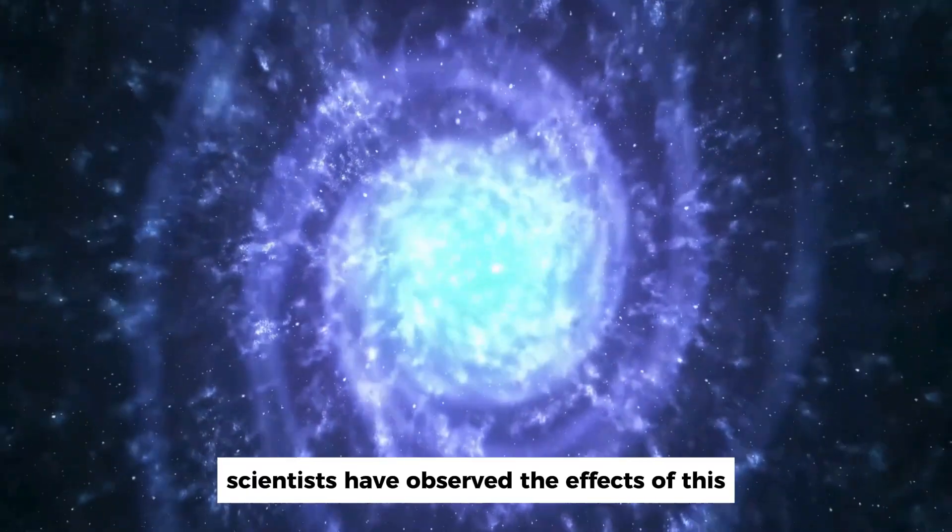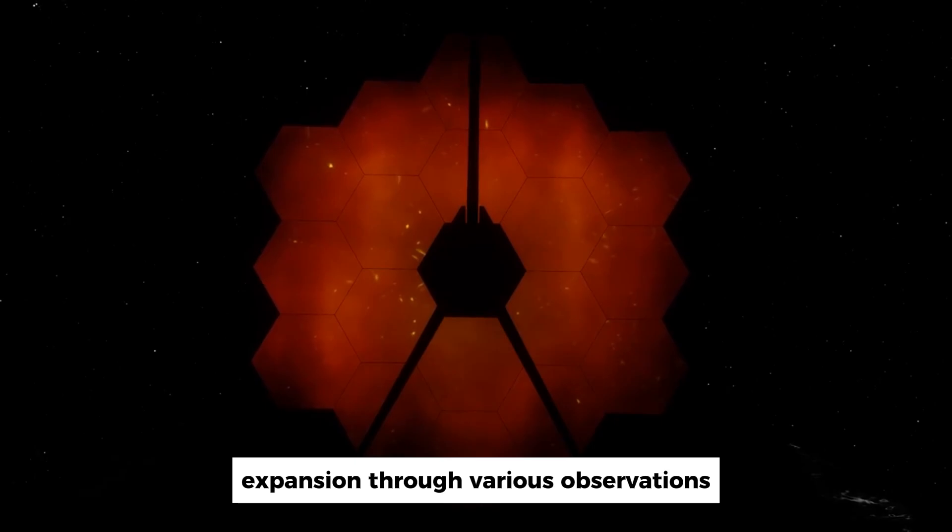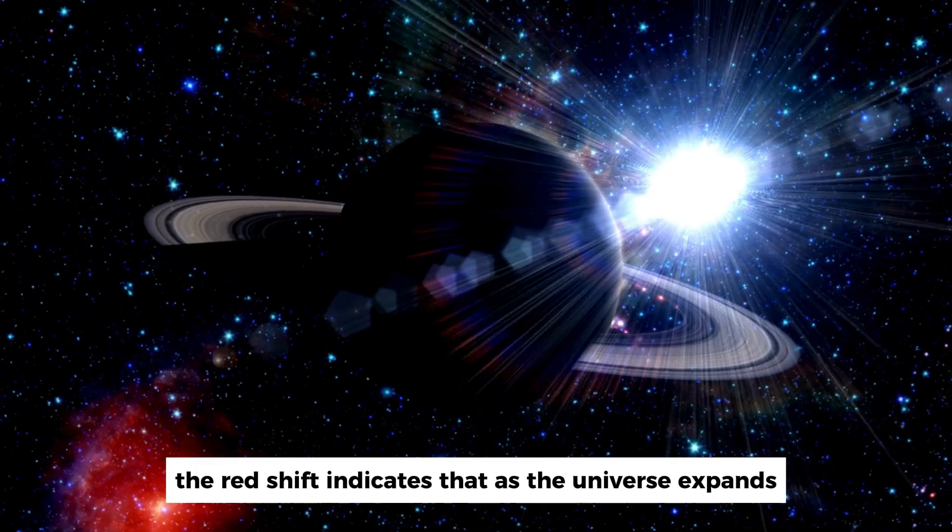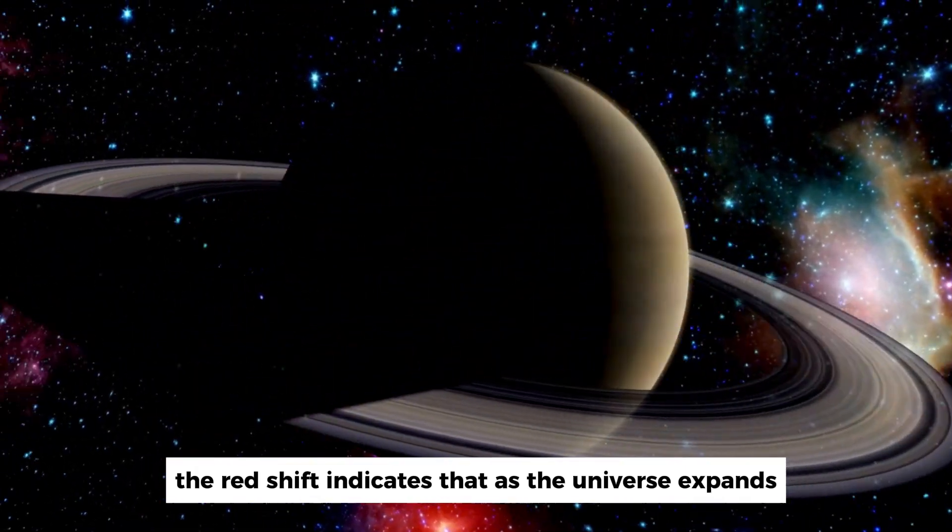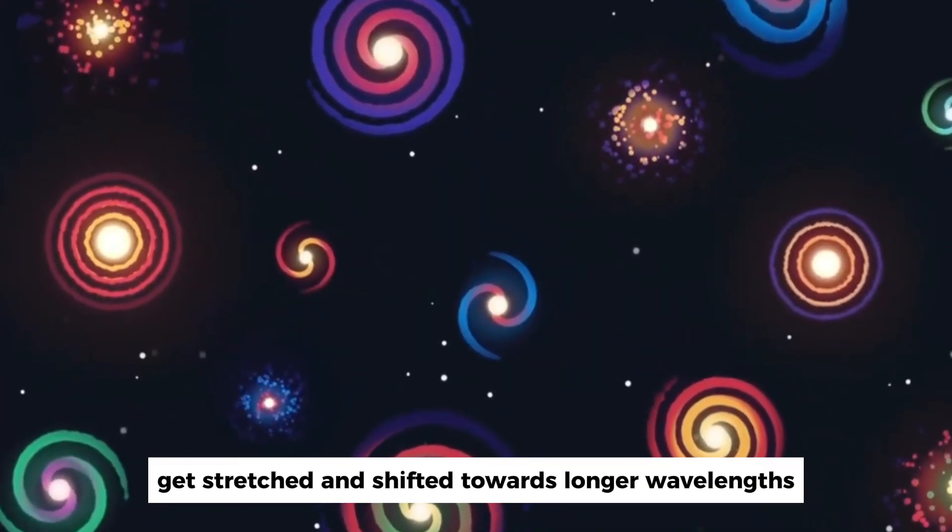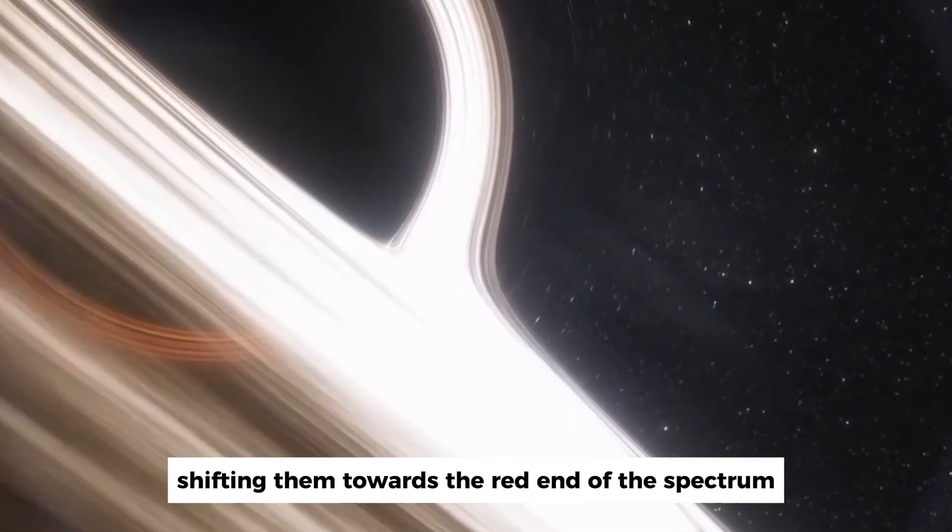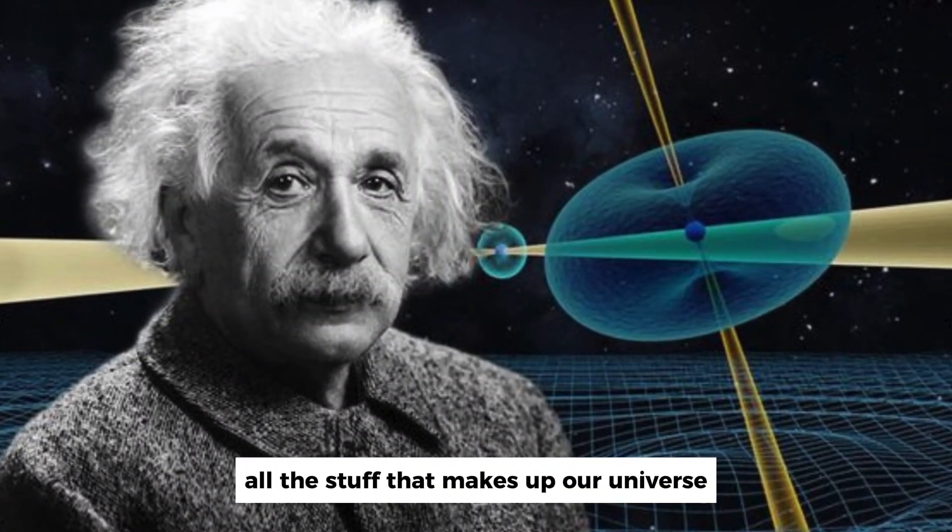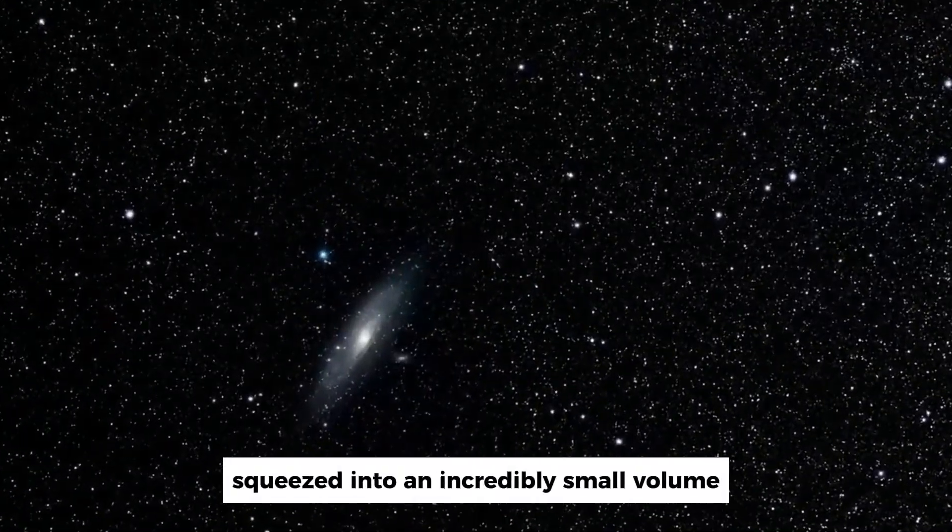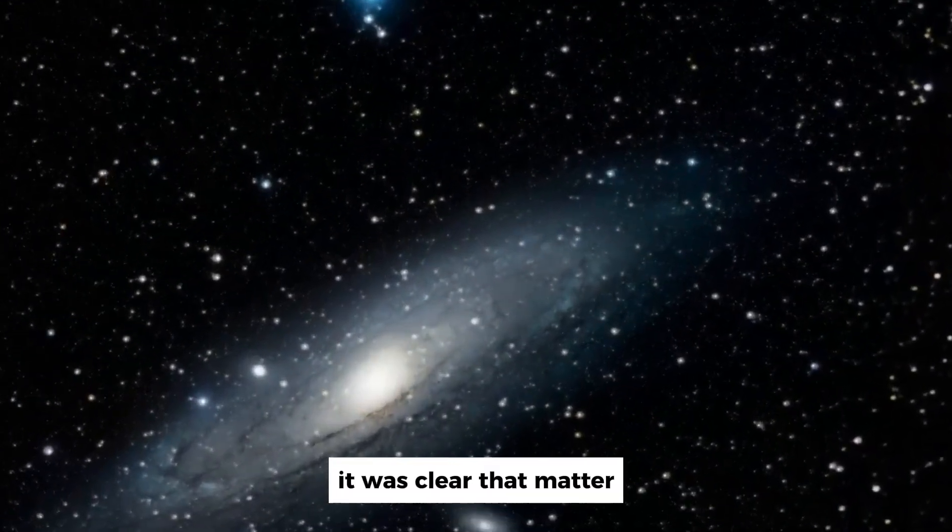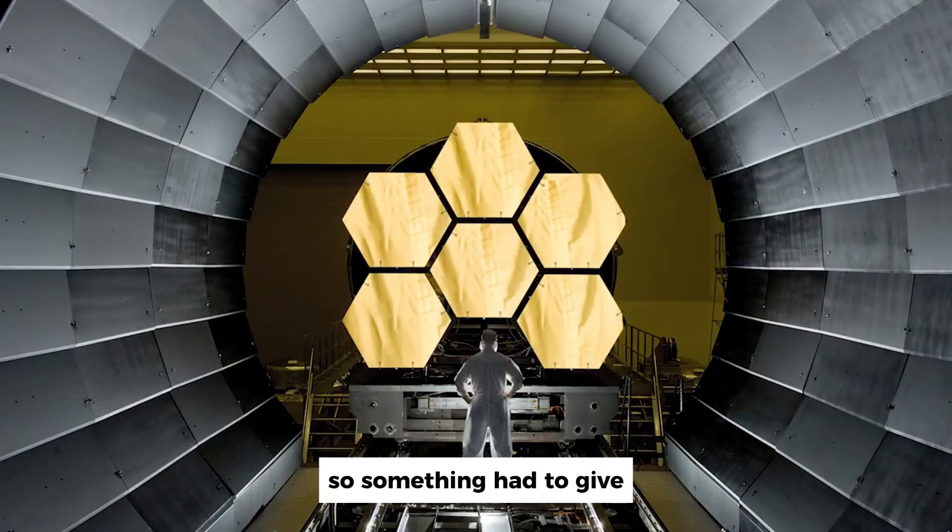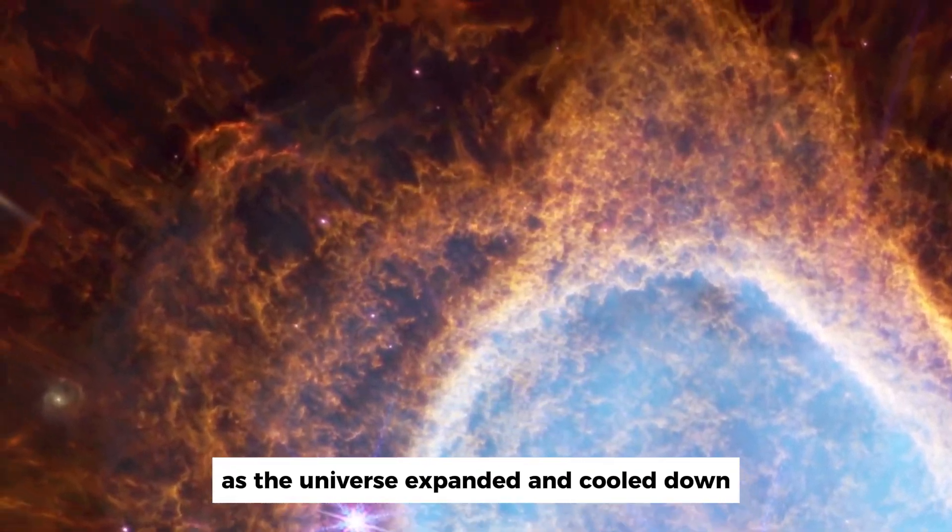This ongoing expansion is known as the expansion of the universe or cosmic expansion. Scientists have observed the effects of this expansion through various observations, such as the redshift of light from distant galaxies. The redshift indicates that as the universe expands, light waves get stretched and shifted towards longer wavelengths, shifting them towards the red end of the spectrum. While the expansion was happening, we had all the stuff that makes up our universe squeezed into an incredibly small volume.